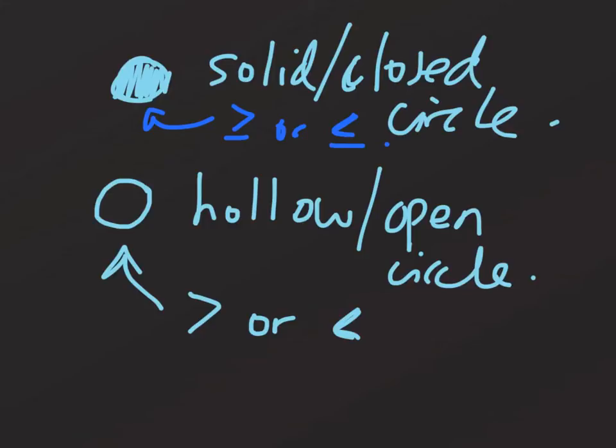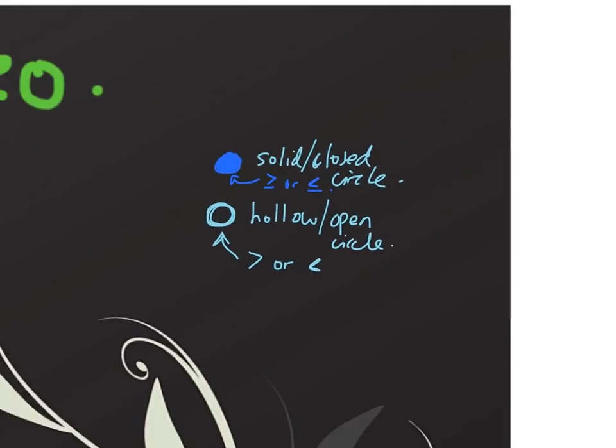The reason being, when it's a closed circle like this, what that implies is that your solution includes the number where that dot is. If it's a hollow circle, that means it doesn't quite include that number. And I think that'll start to make more sense when we look at some examples.